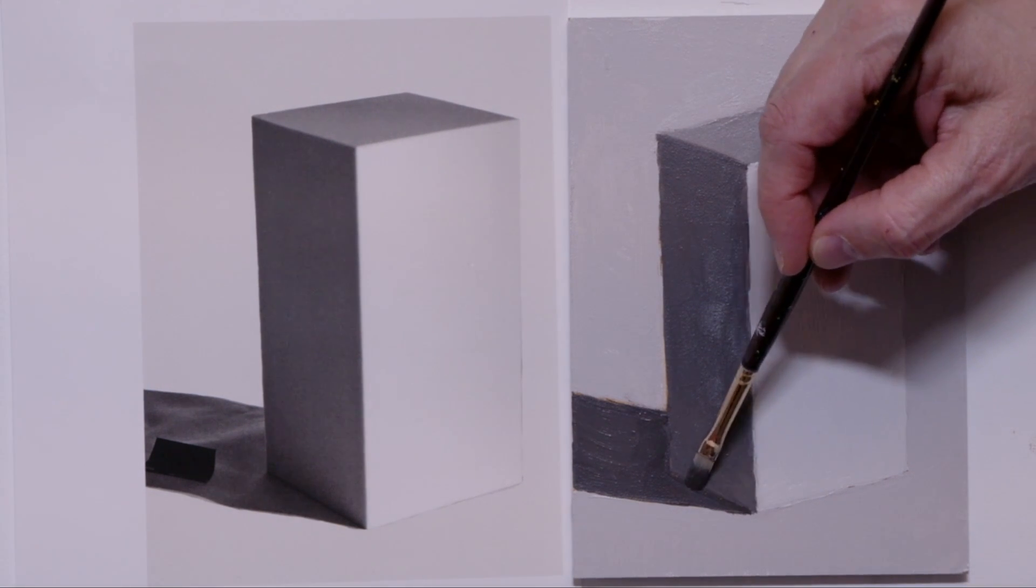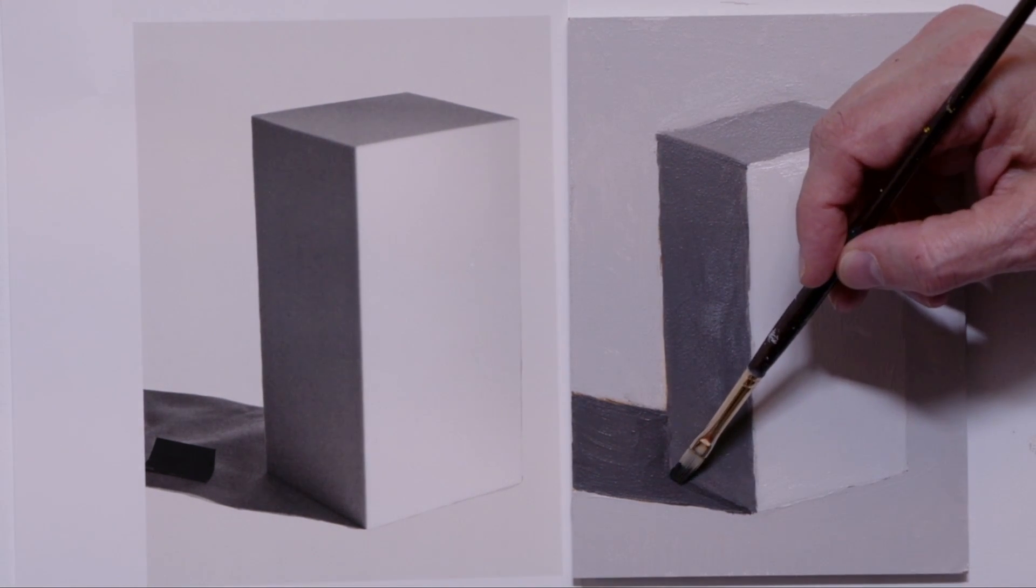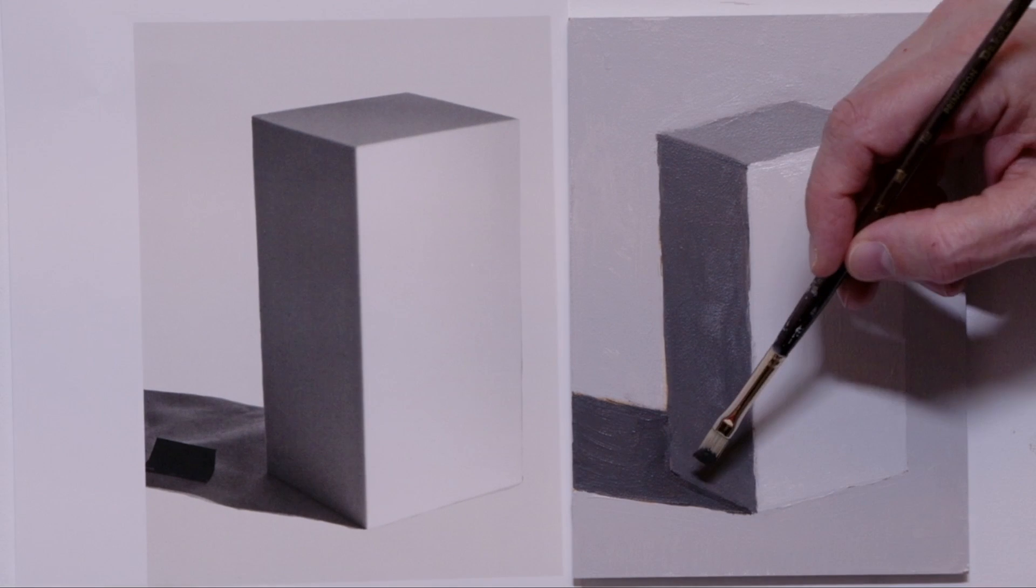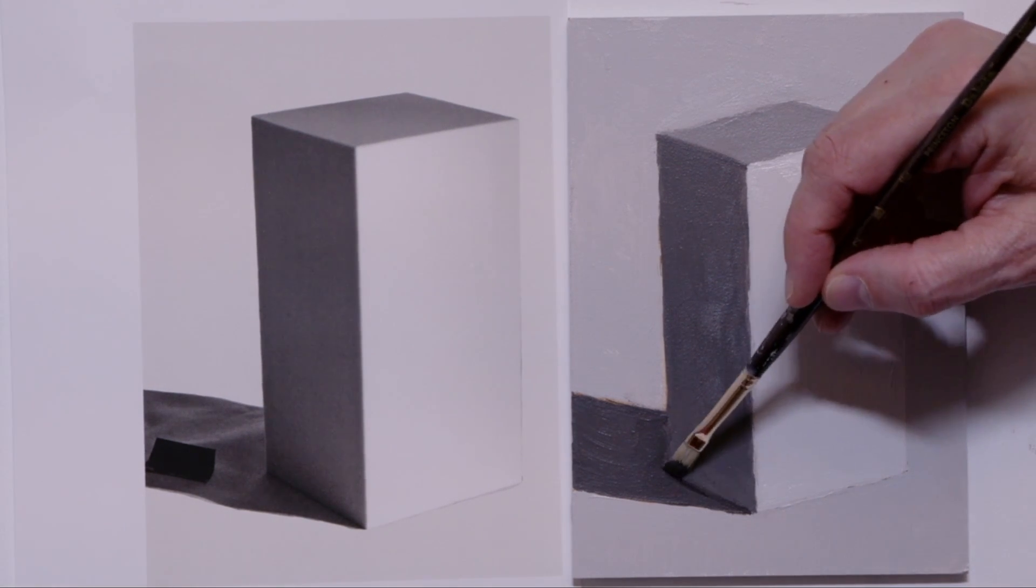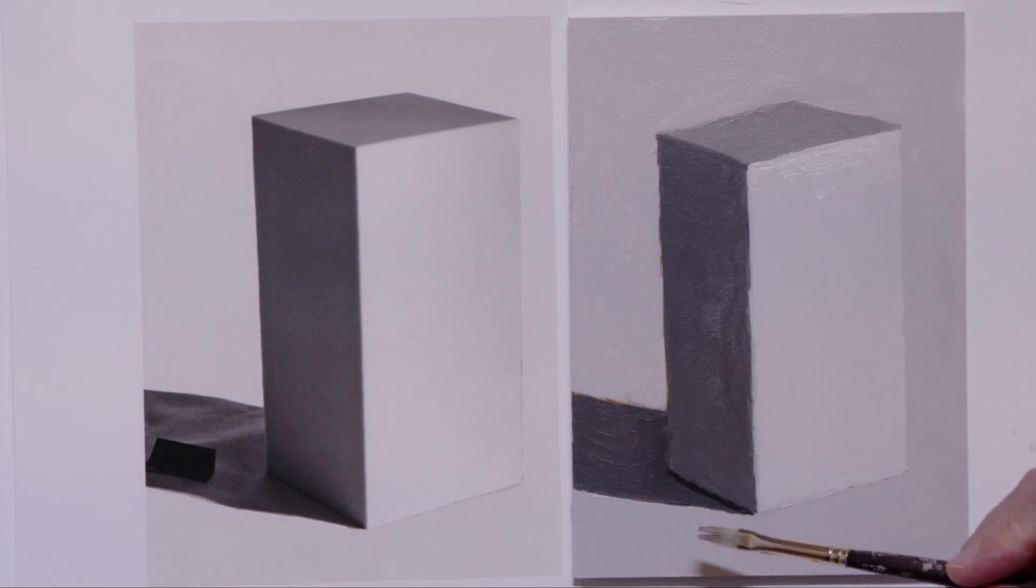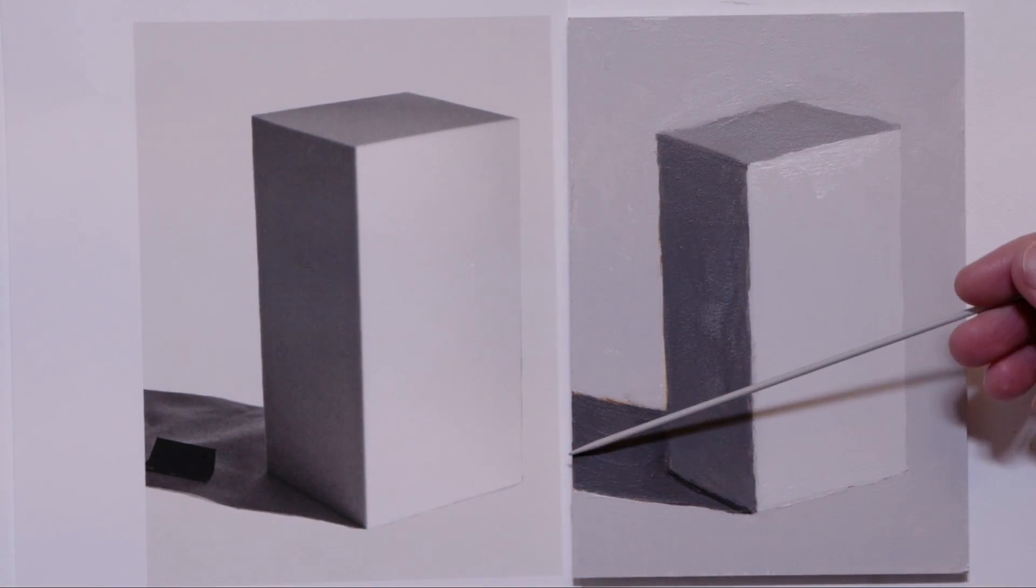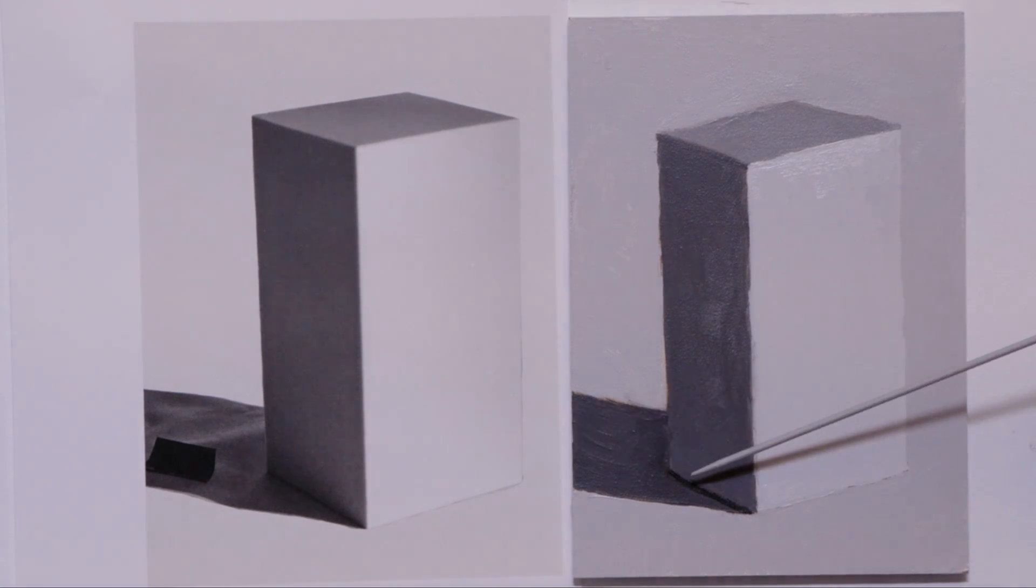Now we're going to put in the darkest part of the painting. That is that core shadow. I'm going to clean it up and I'm going to tidy it up. So we're near the end of our painting. We've got that core shadow in. We've got the background, the direct light, the top plane, the side plane, the shade plane, the cast shadow, and there is the darkest part, the core shadow.